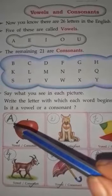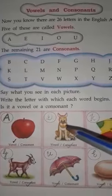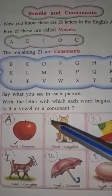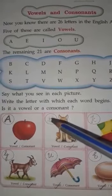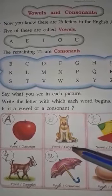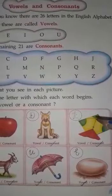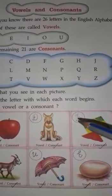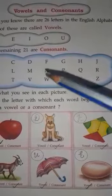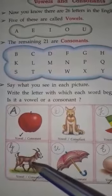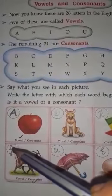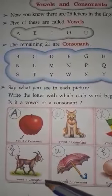What is A? A is a vowel. This is a dog, and dog's spelling starts with D. So D is a consonant. This is a kite, and kite's spelling starts with K. K is a consonant. This is a goat, and goat's spelling starts with G. G is a consonant.